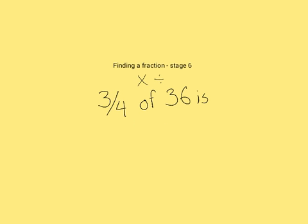Okay, so if we start with this problem: three quarters of 36 is. Now the trick is that our whole is 36, so four quarters is equal to 36. But what we want to find out is what three quarters is.